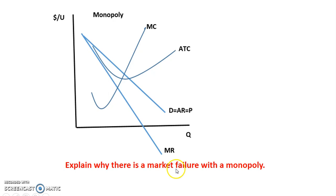When we talk about market failure, we talk about not achieving the socially optimal output or not producing at allocative efficiency. When we look at the monopoly, we can see their output by using the profit-maximizing output of MR equals MC. And that gives you the quantity of Q1.